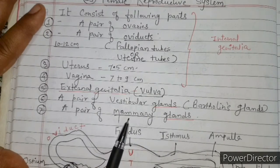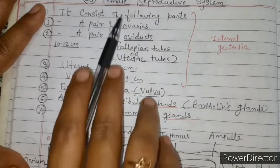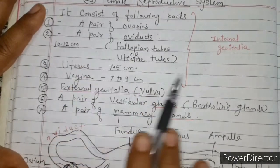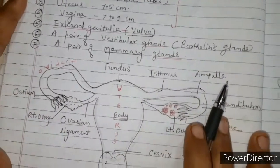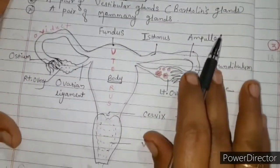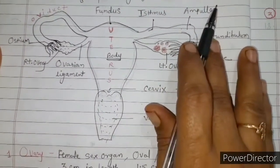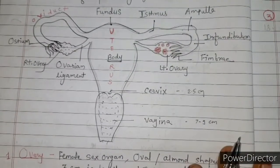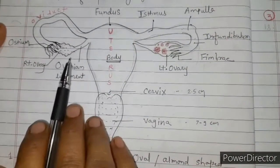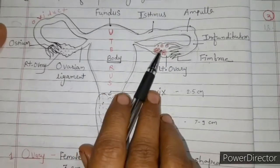The mammary glands and external genitalia — the vulva — are external structures, while all others are internal genitalia. Now, this is the diagram of the female reproductive system where all the parts are shown. The first part is the pair of ovaries.